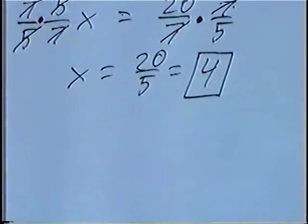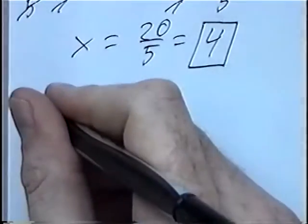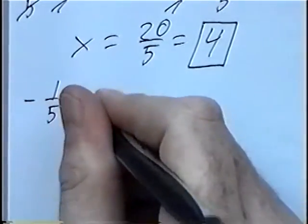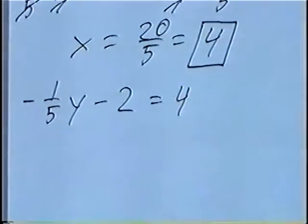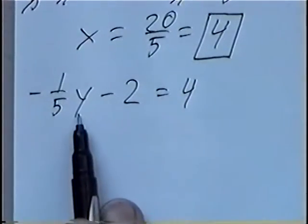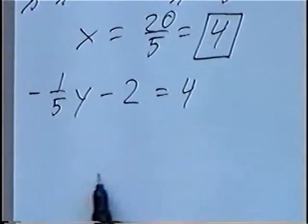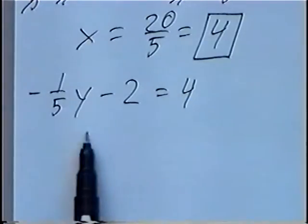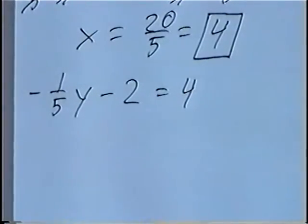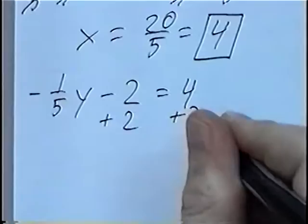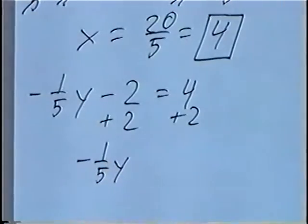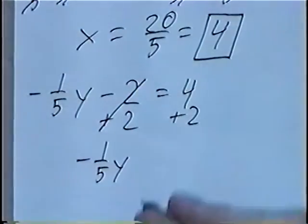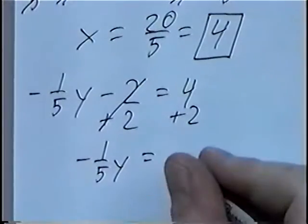Second question, and last question for the section: negative 1 over 5y minus 2 equals 4. Again, we'll solve for y, so we'll move all the numbers to the other side. First step: the minus 2 away from y — we can cancel it out by adding 2 on both sides. The negative 1 fifths y would stay the same, negative 2 plus 2 would cancel, and 4 plus 2 would be 6.